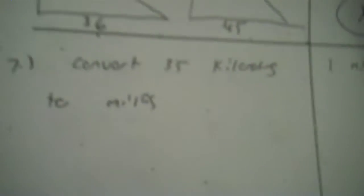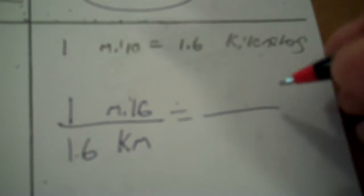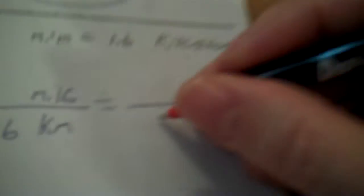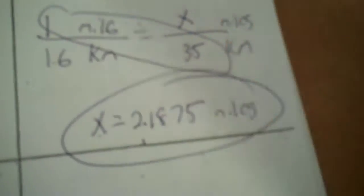Number 7. Convert 35 kilometers to miles. 1 mile equals 1.6 kilometers. So on your first ratio, you put 1 mile and then 1.6 kilometers. And then put the labels in the same order. Now the quantity you're given is 35. It's 35 kilometers. And we have to find the miles. So 1 times 35 equals 16 times x. So divide by 16. 2.1875. You can write that whole thing. You can round it. I don't care. But that is the right answer. Miles.